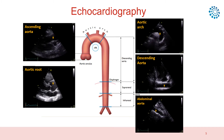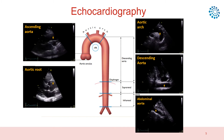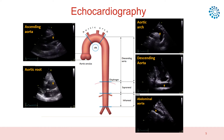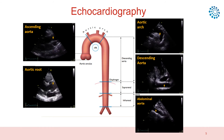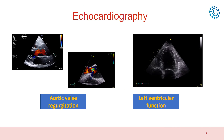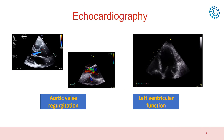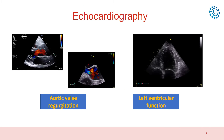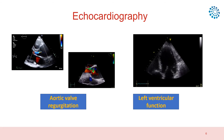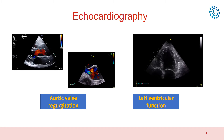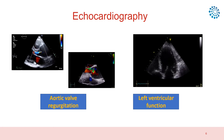With the echo, we can explore also the aortic arch and parts of the descending aorta and the abdominal aorta, as you can see here. However, the visualization is not totally complete. The echo is also useful to have information on the aortic and mitral valve functioning and also about the left ventricle function.